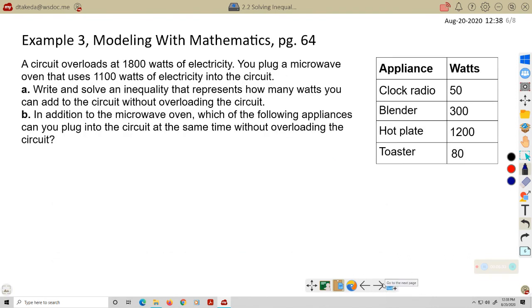Okay. Let's take a look at our last example here, modeling with mathematics. This is on page 64. A circuit overloads at 1,800 watts of electricity. You plug in a microwave that uses 1,100 watts of electricity into that circuit. Write and solve an inequality that represents how many watts you can add to the circuit without overloading the circuit. And then in addition to the microwave oven, which of the following appliances, etc. So we'll look at that in a second. Let's just go back to A here. Let's talk about what we want to do here. So the circuit overloads at 1,800 watts of electricity. Essentially what happens is different appliances, they draw a certain amount of power from the circuits when you plug them into the wall.